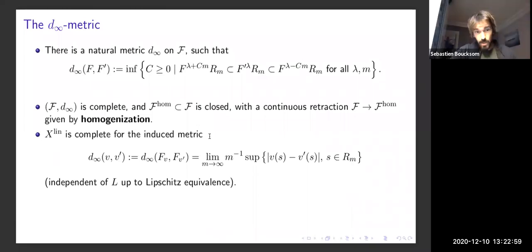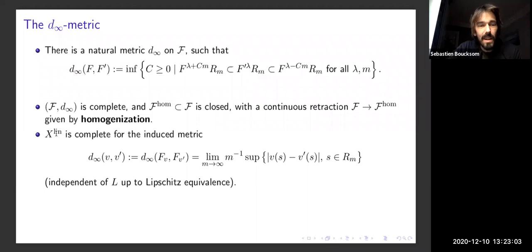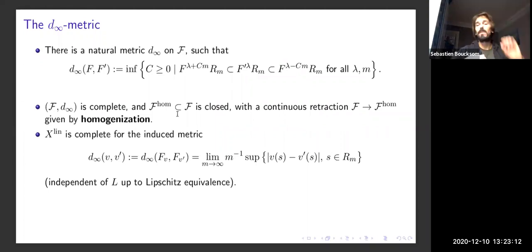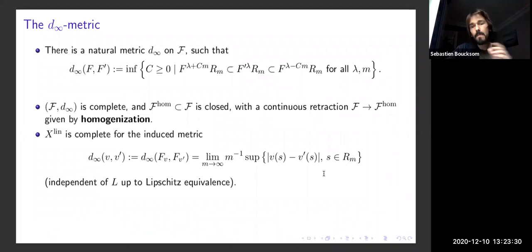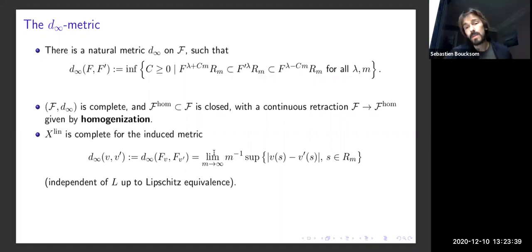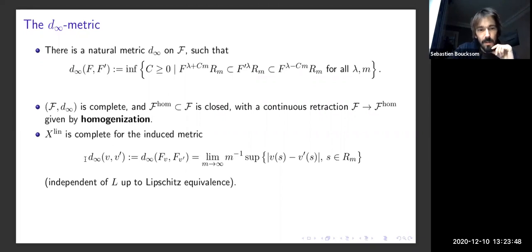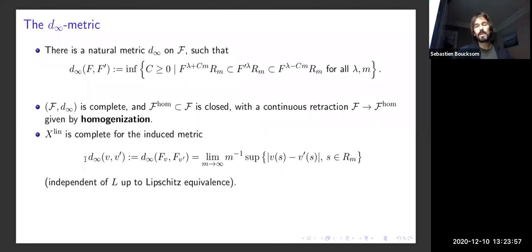The space of valuations X_lin with linear growth sits as a subset of the homogeneous filtrations, and you get an induced metric: d_∞(v, v') is the distance between the two corresponding filtrations. The formula compares vanishing orders of sections of Rm along v and v', and it turns out to be equal to the limit as M → ∞ by a super-additivity property and the Fekete lemma. Changing the line bundle changes this metric only up to multiplicative constants, so you get an intrinsic metric geometry on X_lin.